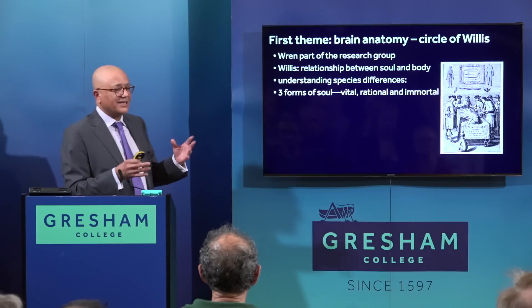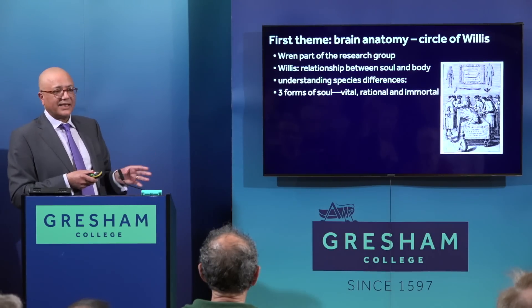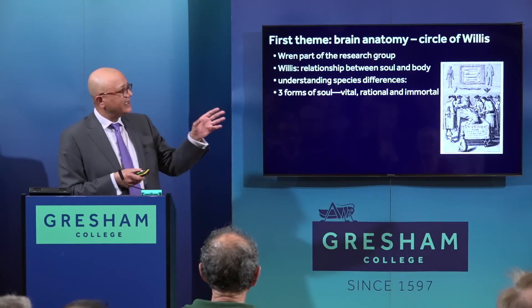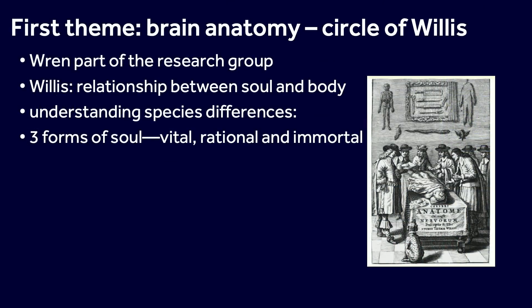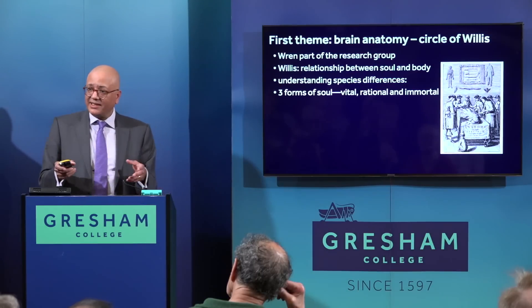So turning to the first theme — back to medical sciences — the circle of Willis and brain anatomy. Wren was part of this active research group and was actively dissecting. This is a print from the day with Willis leading the dissections, and there next to him is Wren. Willis was driven by an interest between the soul and the body, particularly to understand species differences. He believed in a vague theory of three types of soul: the vital, the rational, and the immortal, and was using dissection to understand that better, particularly dissection of the brain.